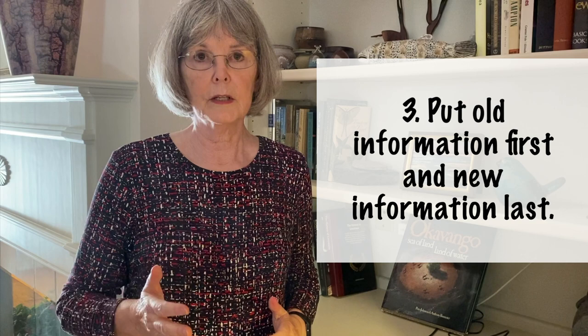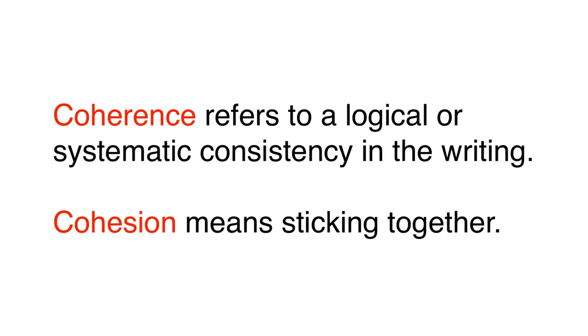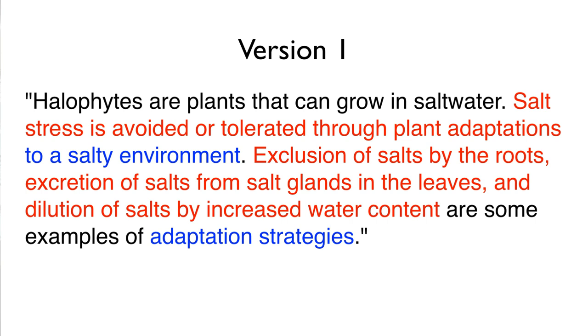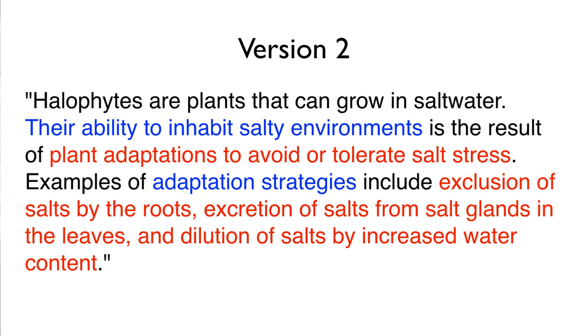Three: put old information first in the sentence and new, important information last. The idea here is to link sentences in a passage in a way that promotes coherence and cohesion. Here are two passages that illustrate this point. I've highlighted old information in blue and new information in red. This passage sounds awkward because the second and third sentences put the new information first. Here is a revision — the second passage flows better because the structure of the second and third sentences presents the old information first before asking the reader to consider new information.